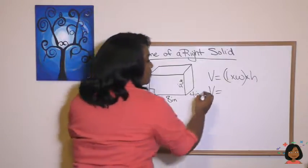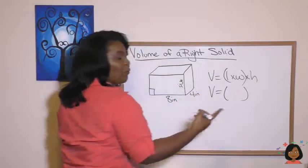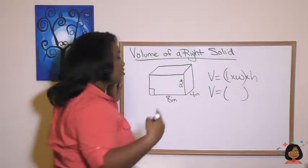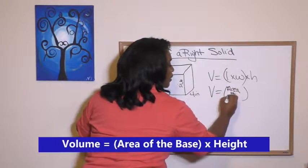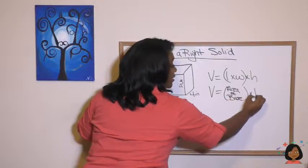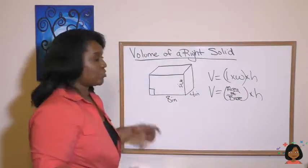That would be our length times our width. So we're going to regroup it instead of saying length times width, we're just going to call it the area of the base. And then times the height. So let's do it.